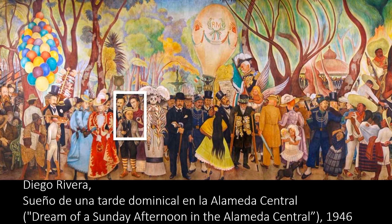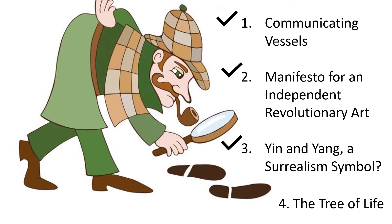Here's an enlarged version of the mural. We can see Kahlo and Rivera are outlined with the white box. The yin-yang symbol, therefore, may have been a secret message for the Surrealism Movement and Social Revolution in Diego Rivera's Pan American Unity mural.